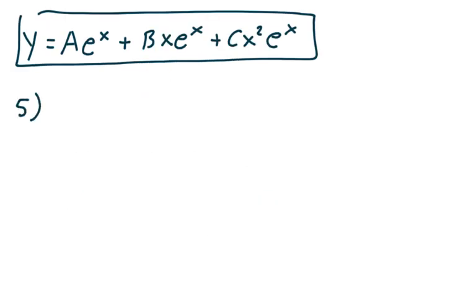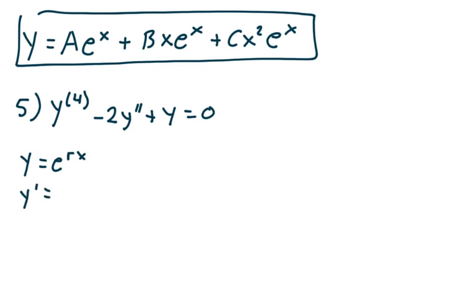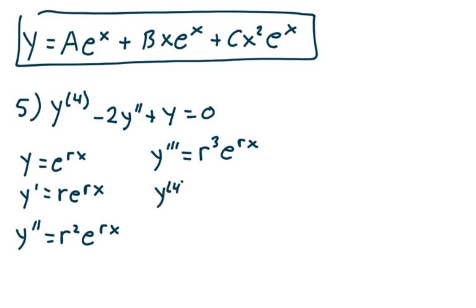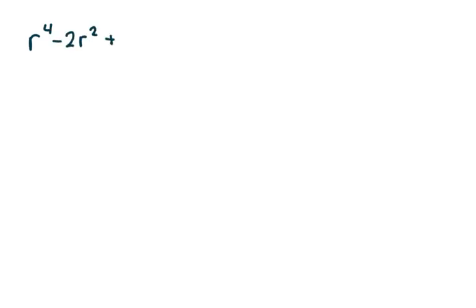Let's do one more example — a fourth-order differential equation. When you have a fourth-order equation, you need four linearly independent solutions. Suppose I have the fourth derivative of y minus 2y double prime plus y equals 0. Set y equal to e to the rx. y prime is r e to the rx, y double prime is r squared e to the rx, y triple prime is r cubed e to the rx, and the fourth derivative is r to the fourth e to the rx. Making my substitution, I get r to the fourth minus 2r squared plus 1 equals 0.